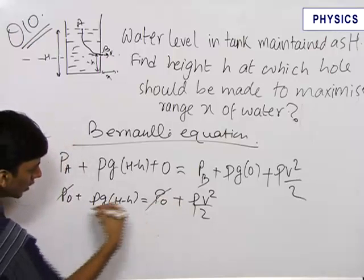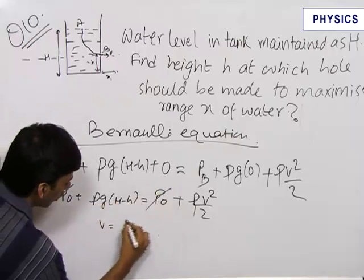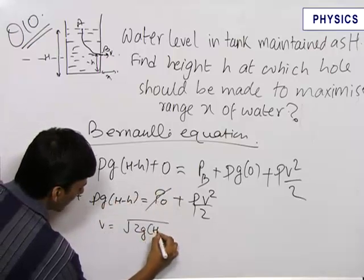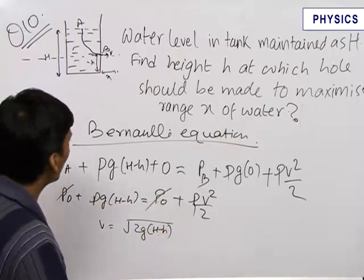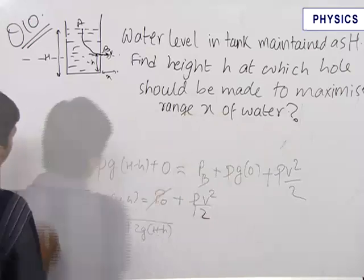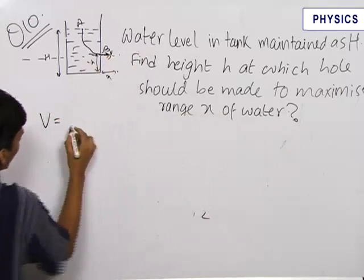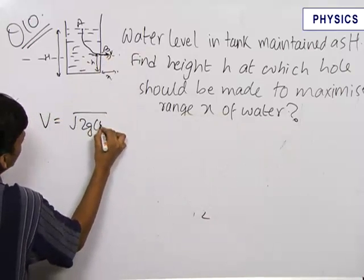P₀ cancels, ρ cancels, and we get V = √[2g(H - h)]. Therefore, the velocity of the outcoming water is √[2g(H - h)].